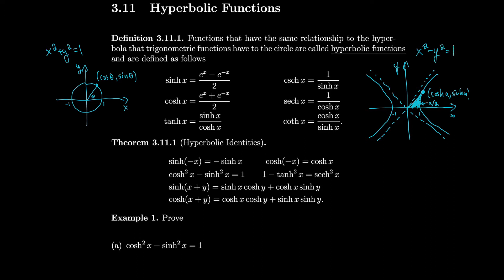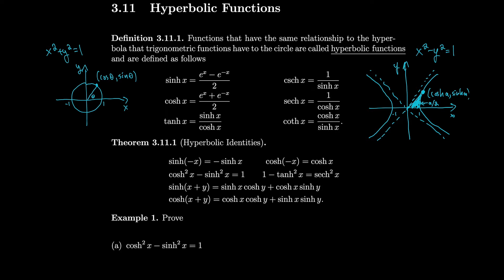So it should make sense when we want to prove the identity that cosh² − sinh² = 1, because cosine² + sine² was equal to 1. Notice also that these are all defined using exponential functions. In particular, if you look at cosh, it's always positive because both of those exponential terms are positive.